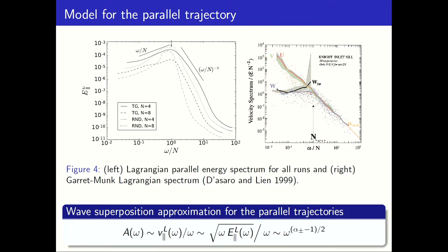Here you see the Lagrangian energy parallel spectrum. When we computed this spectrum from our simulations, we found that it was similar to the Garrett-Munk spectrum, which is an empirical spectrum for internal wave energy in the ocean. Lien converted this Eulerian spectrum into a Lagrangian one. The parallel spectrum is flat for frequencies shorter than the buoyancy frequency N, has a peak near N, and then falls rapidly toward zero. This corresponds to the energy of the largest eddies, energy-containing waves near N, and the smallest fastest eddies.